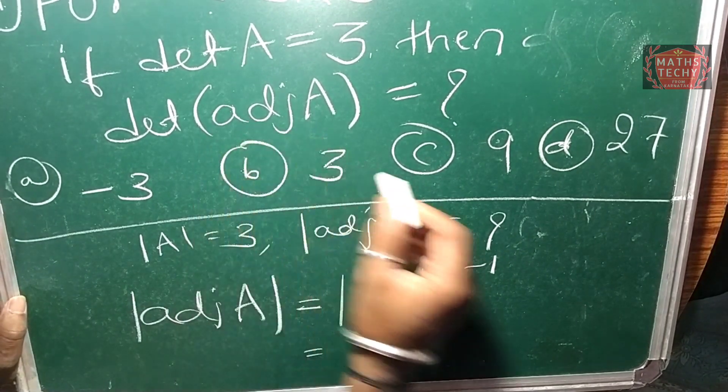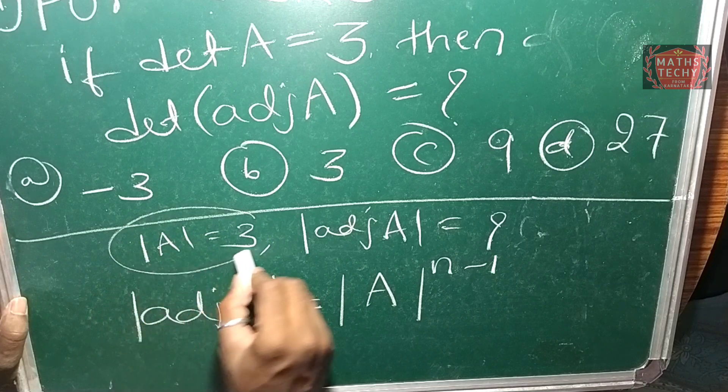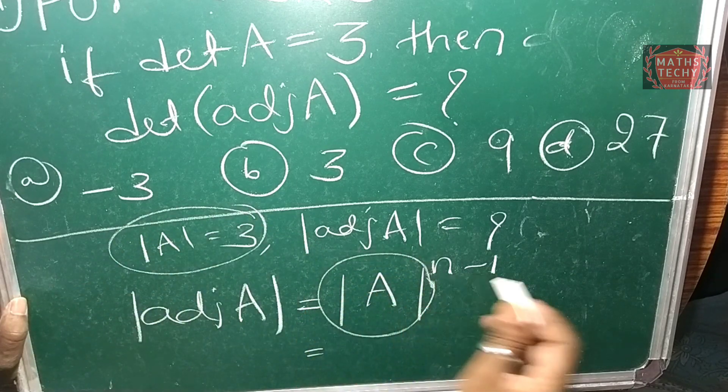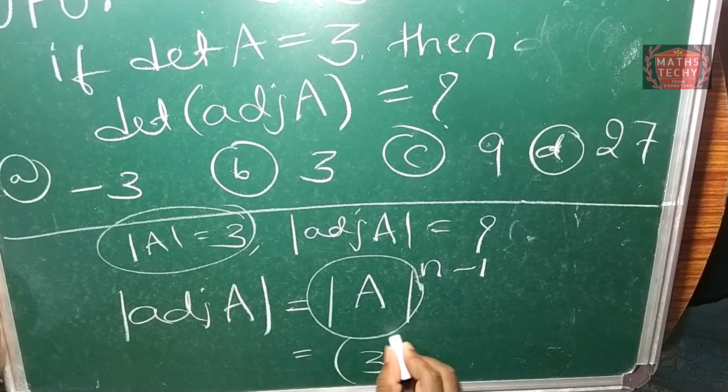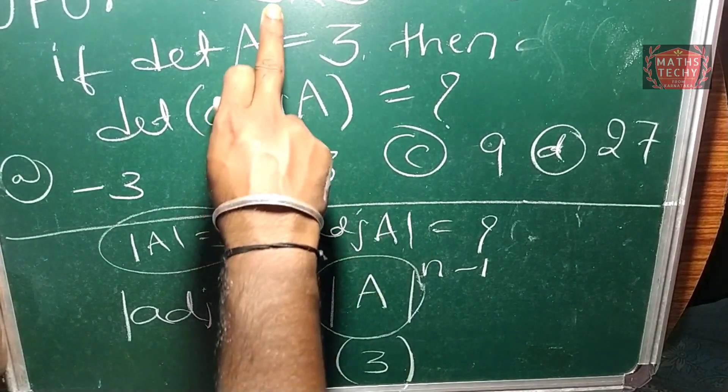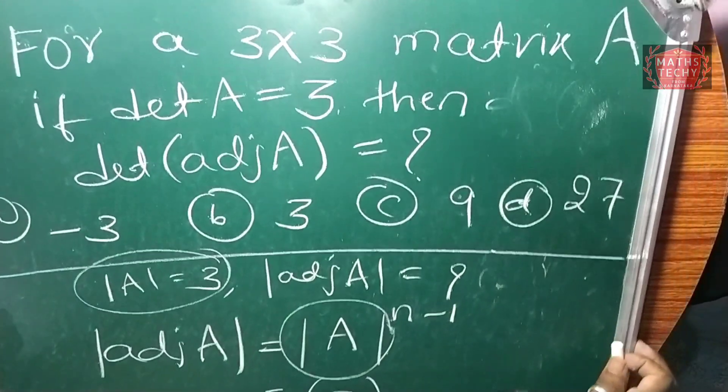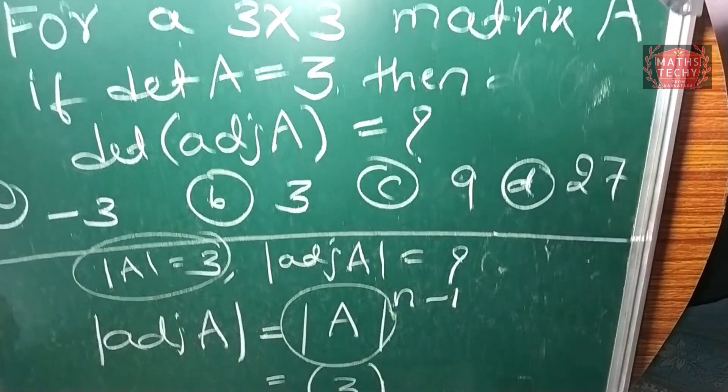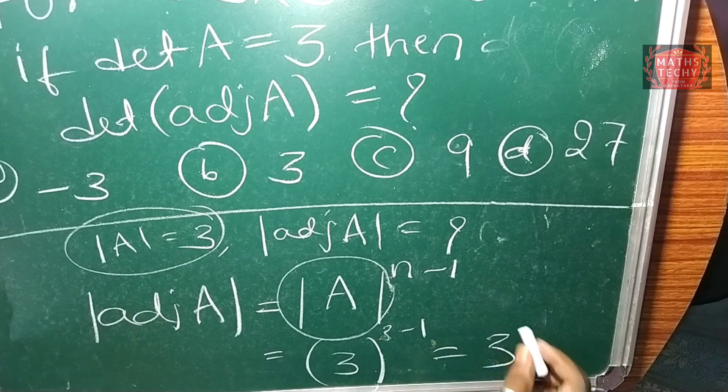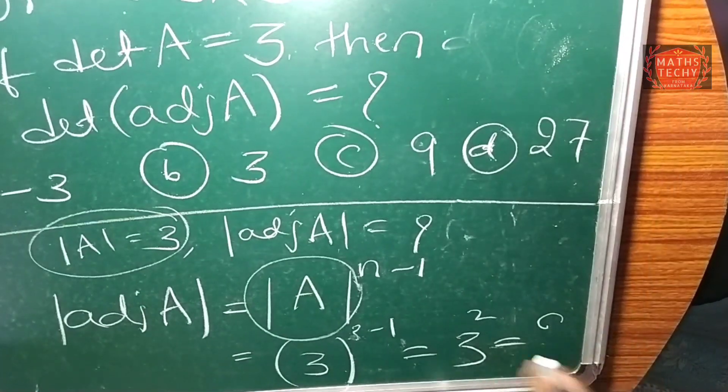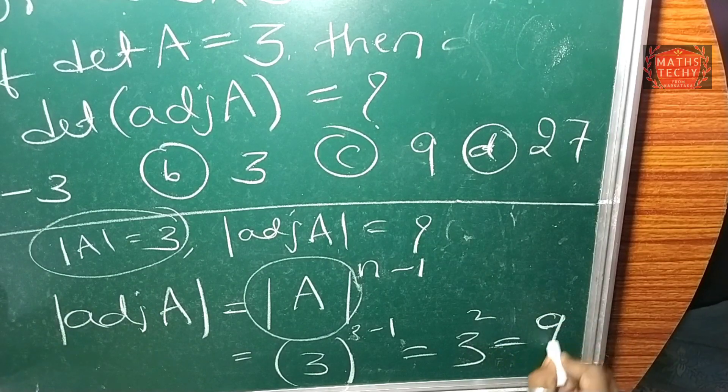We know determinant of A is equal to 3, and the order is 3. So let's substitute: 3 to the power of 3 minus 1, which equals 3 to the power of 2, which equals 9.